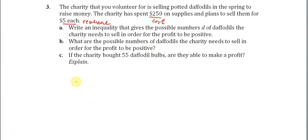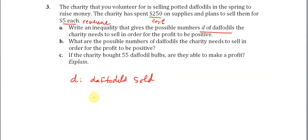Let's set up some variables here. They've already called the variable D — D is the number of daffodils sold. The number of daffodils sold times five is how much money we would make from the sales of these flowers.